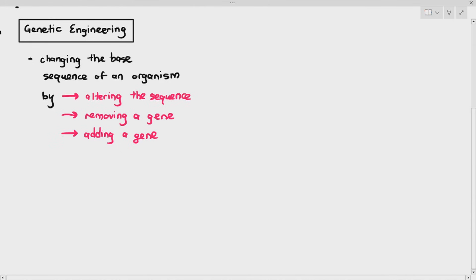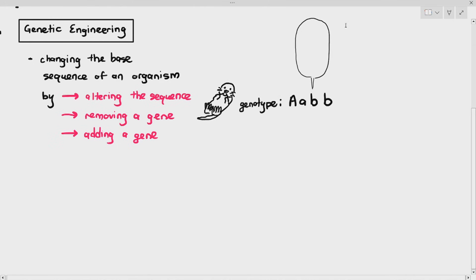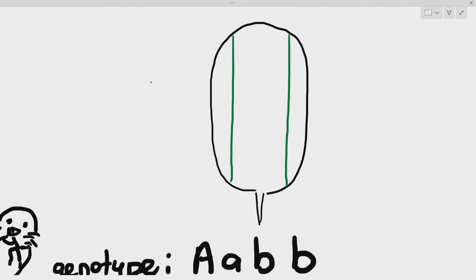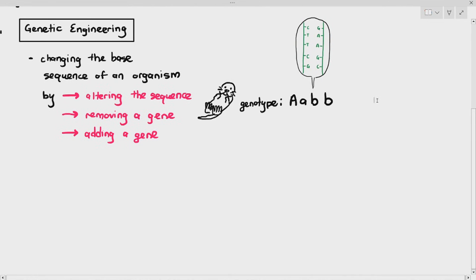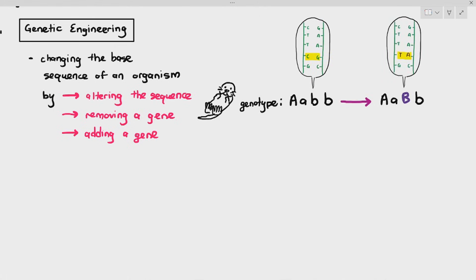As an example, we have an otter with a genotype of large A, small a, small b, small b. The small b alleles have a particular base sequence. What we can do is remove the CG base sequence and replace it with a TA base sequence in order to convert the recessive allele back into a dominant allele. The main thing we are doing is deliberately changing the base sequence of the alleles in this particular organism.